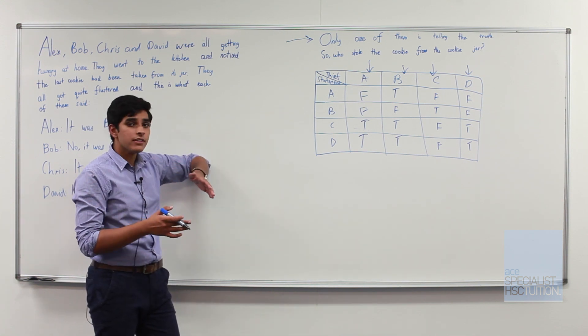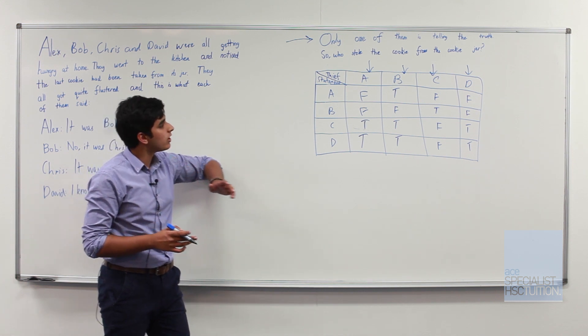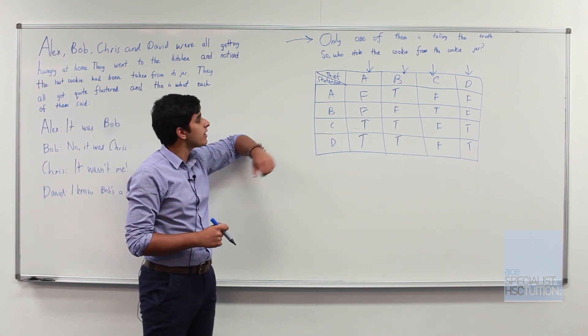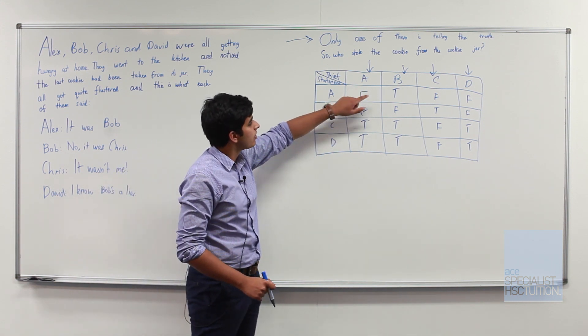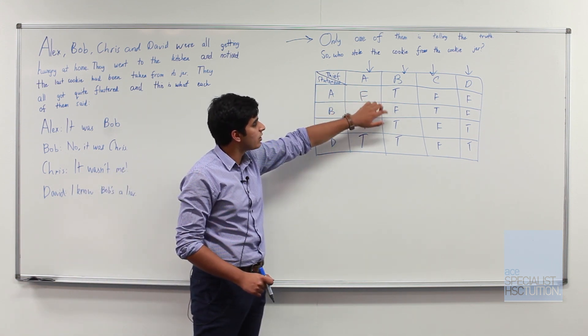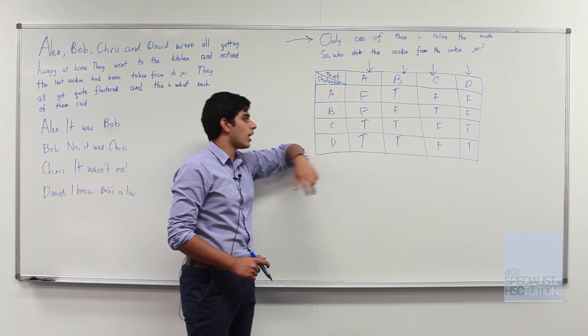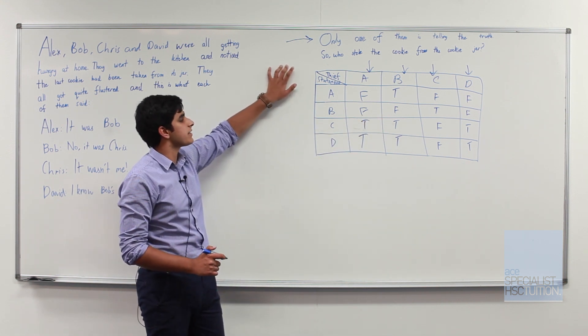So once we've finished our case and identified whether each statement will be true or false in these particular situations we then can check each of them with our rule. We identified previously that the case where A was the thief doesn't work and we'll look at B. In the case where B stole it we have two truths and two lies which again violates our rule.